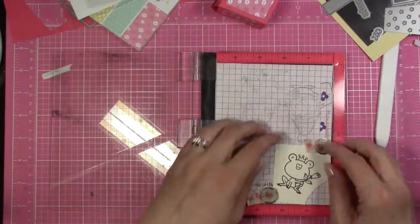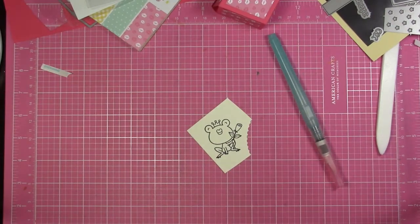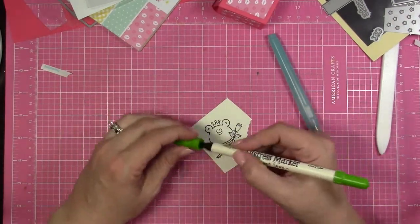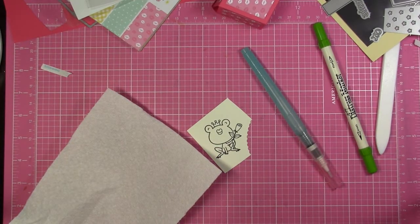And then I'm going to use a water brush and some distress markers for my coloring. So I'm going to go ahead and just color the outline of the image with a distress marker.